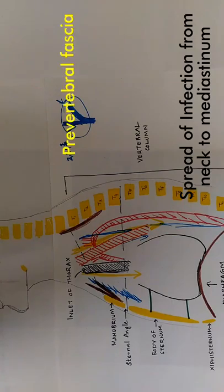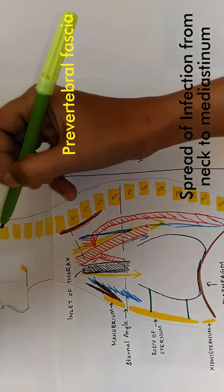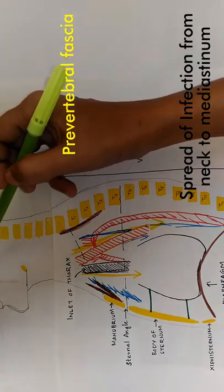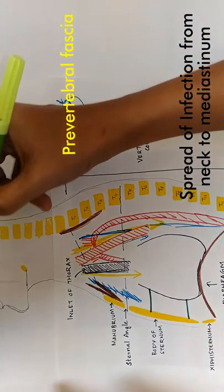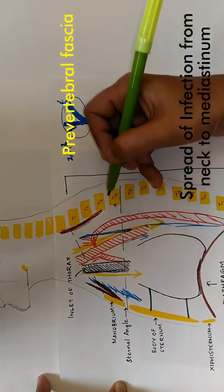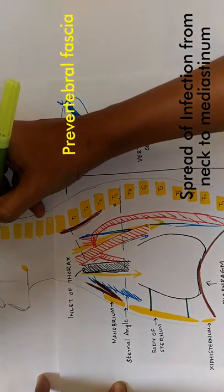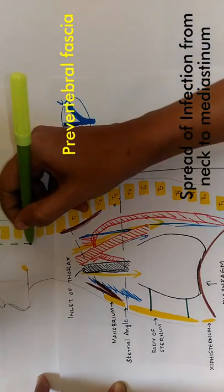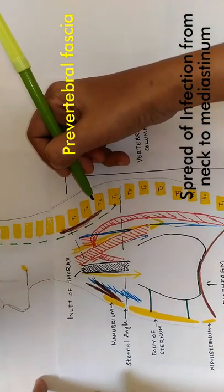The pre-vertebral fascia lies in front of the pre-vertebral muscles. The pre-vertebral layer of the deep cervical fascia lies in front of the pre-vertebral muscle, and it extends from the base of the skull and gets attached to the fourth thoracic vertebra.